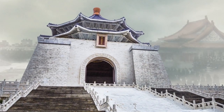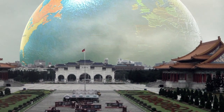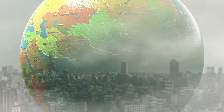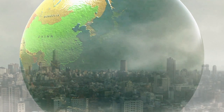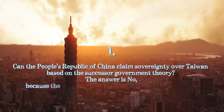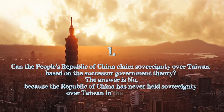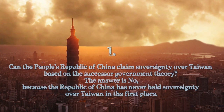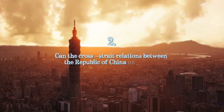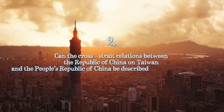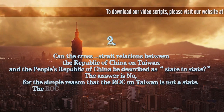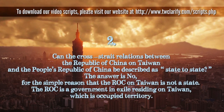In summary, after watching this series of three videos, the members of the viewing audience should be much more capable of differentiating when jurisdiction includes sovereignty and when it does not. In closing, we can pose two more important questions. Can the People's Republic of China claim sovereignty over Taiwan based on the successor government theory? The answer is no, because the Republic of China has never held sovereignty over Taiwan in the first place. Can the cross-strait relations between the Republic of China on Taiwan and the People's Republic of China be described as state-to-state? The answer is no, for the simple reason that the ROC on Taiwan is not a state. The ROC is a government in exile residing on Taiwan, which is occupied territory.